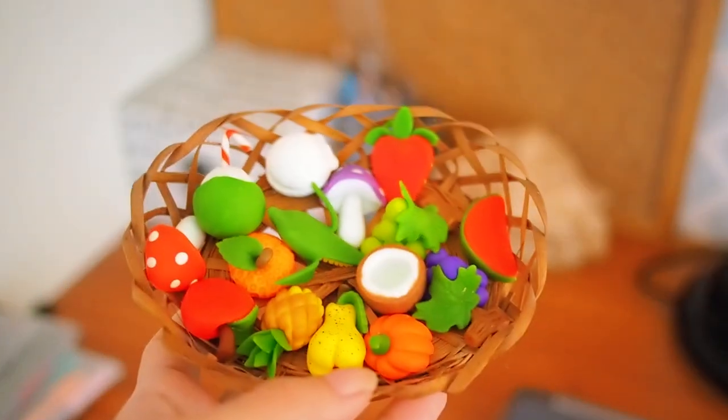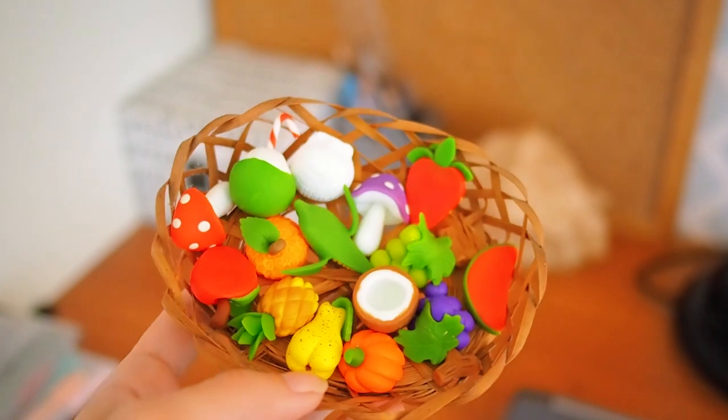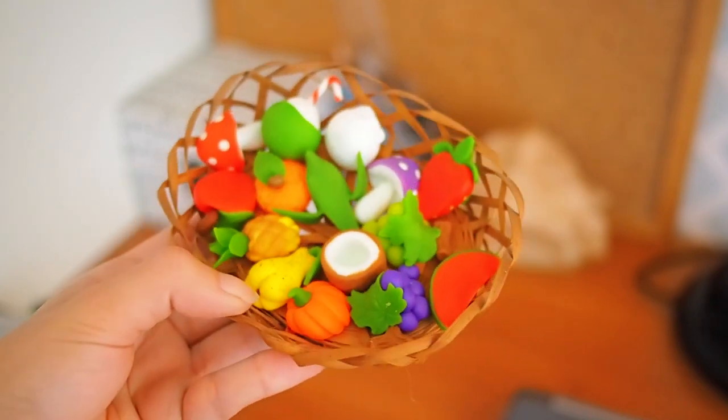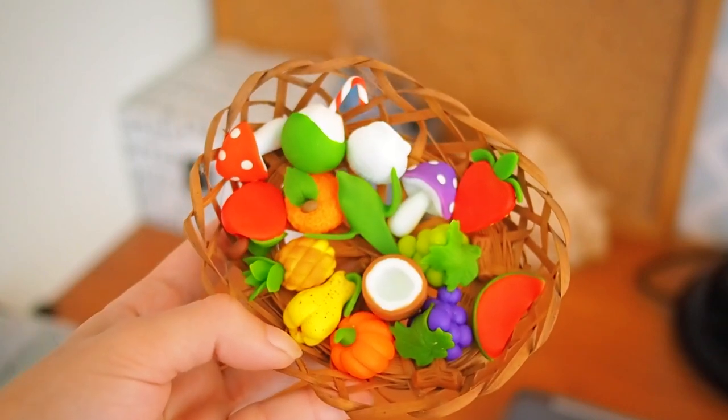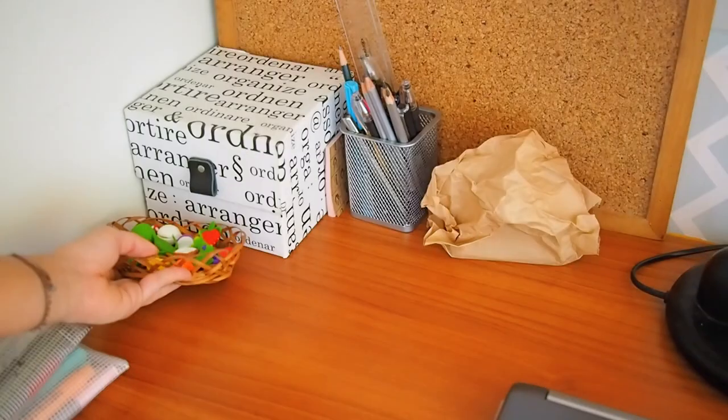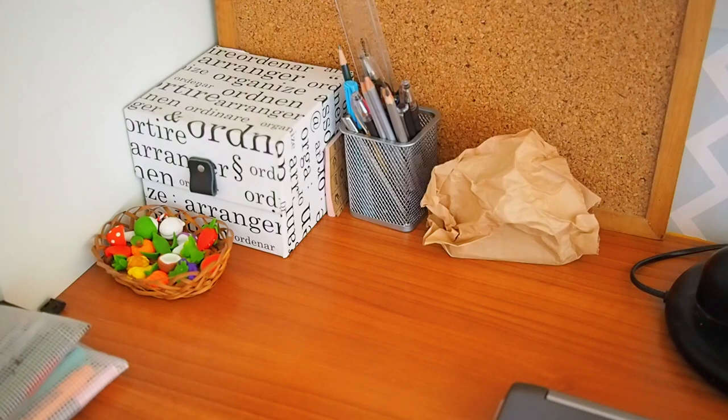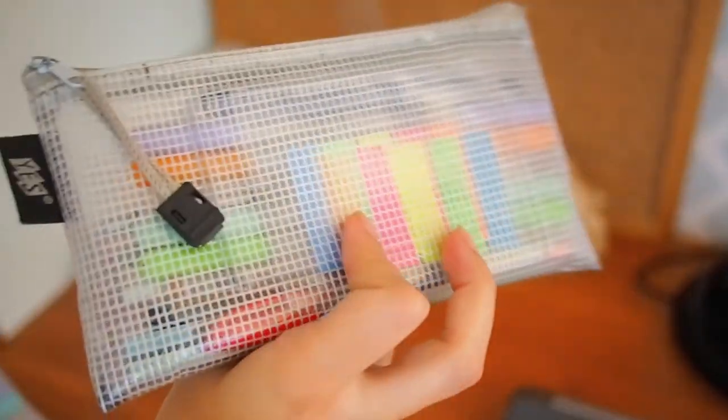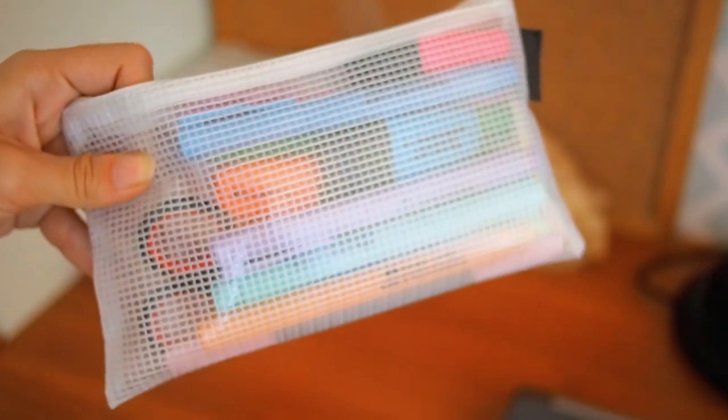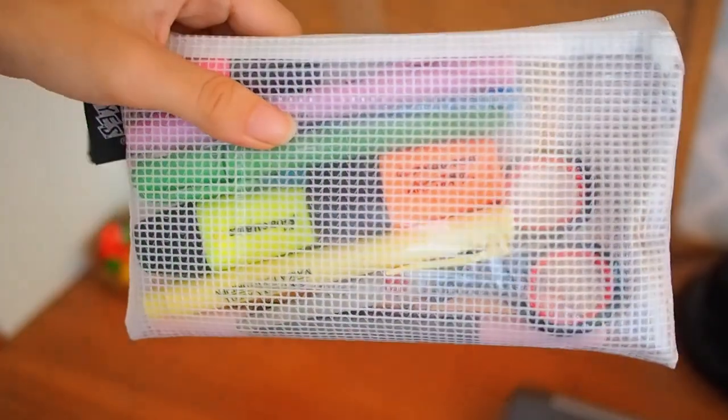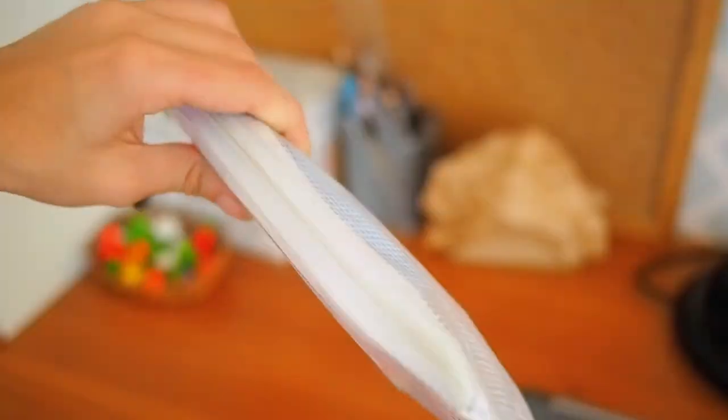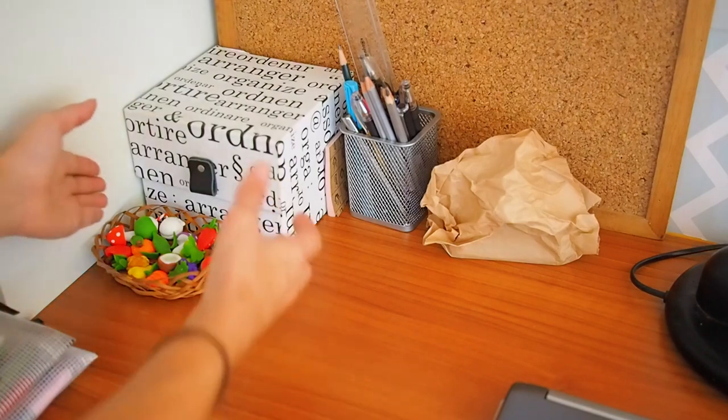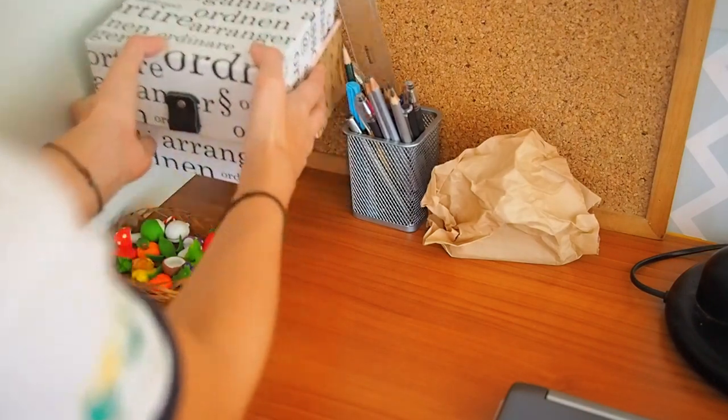I also have some decoration on top of my table, which is this little basket that has very cute little fruits and vegetables and some other kind of foods. Over here I also have my two pencil cases, one for the highlighters and one for the things I usually use on a day-to-day basis that I take to college. They stay here on the corner because I can easily access them.